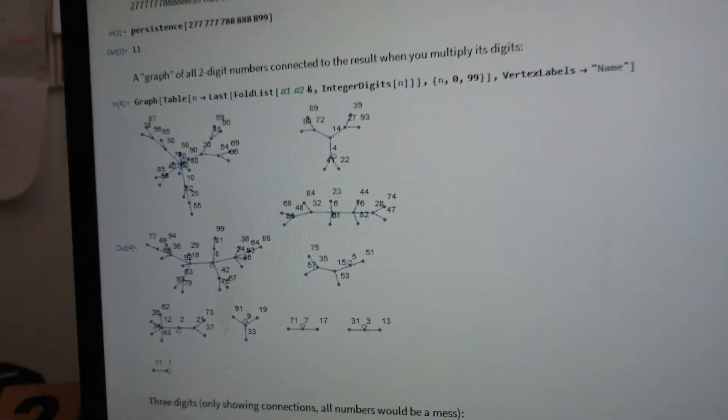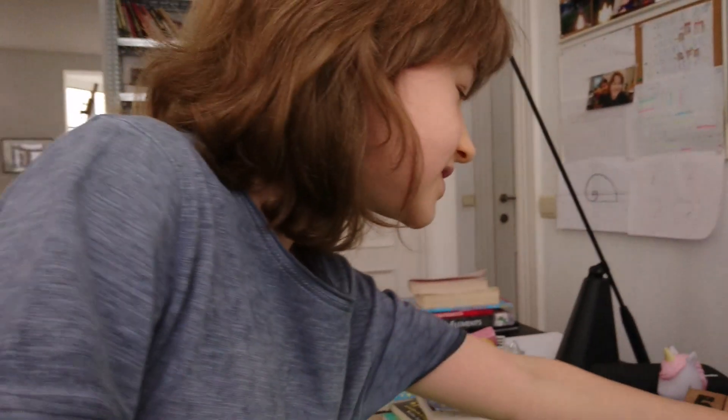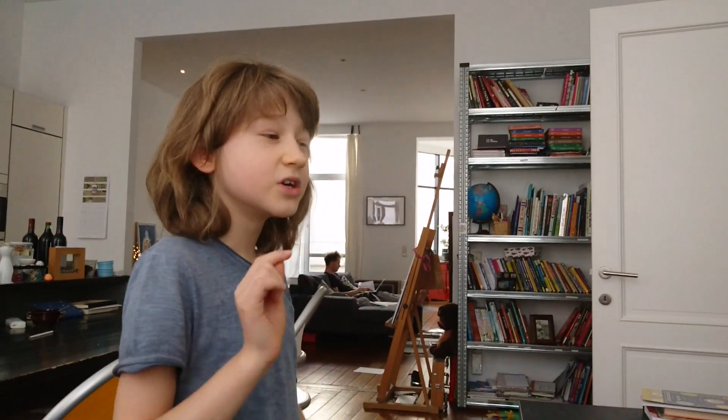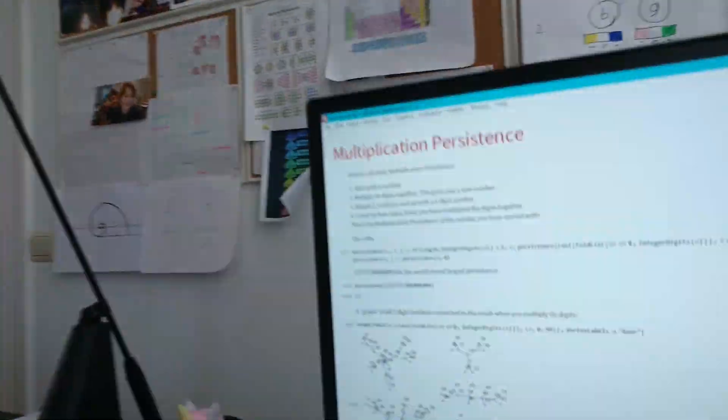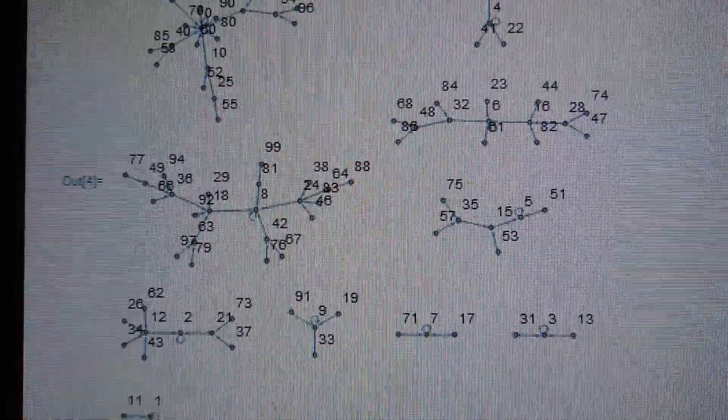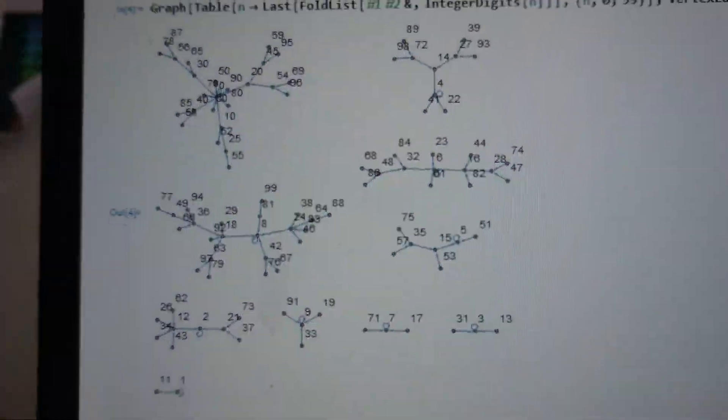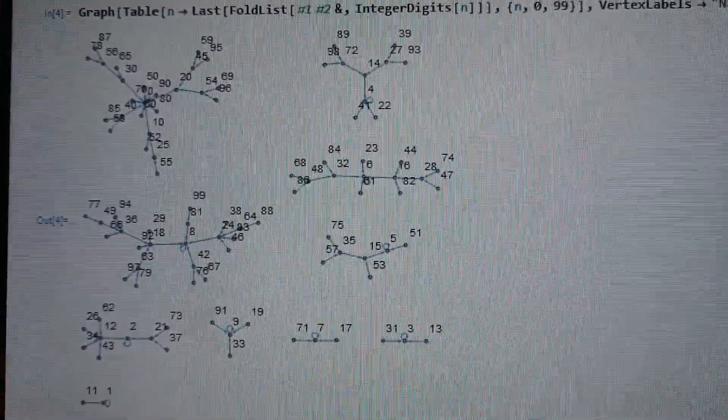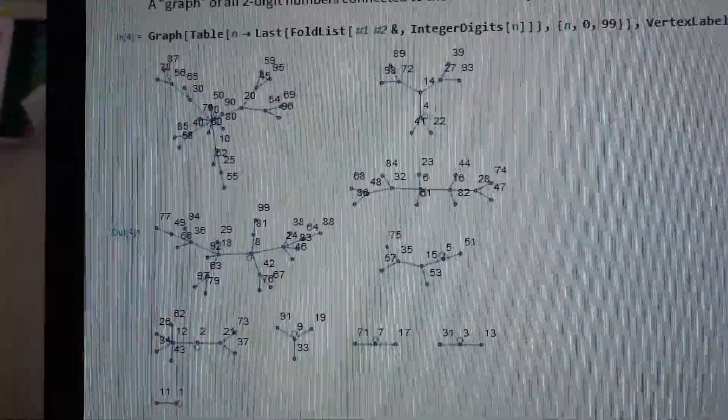And then if you multiply the digits of 48. So 4 times 8. That would get to 32. So that would get us to here. And then 3 times 2 is 6. So we would get to here. And then after that, well, we just get stuck in an infinite loop here. The vertices are numbers that are all two digit numbers. And the number is connected with an arrow to the result that you get when you multiply its digits.